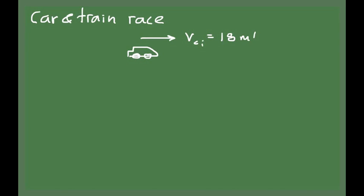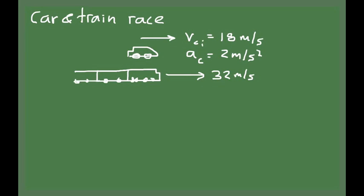Initially, the car has a velocity of 18 meters per second to the right, and we have a train that is actually moving faster than the car. At the moment when the train is passing the car with a speed of 32 meters per second, the driver of the car starts to accelerate. He puts the pedal to the metal and starts accelerating with 2 meters per second squared. So the motion of the car is uniformly accelerated motion and the motion of the train is constant velocity.